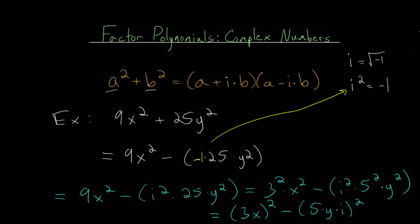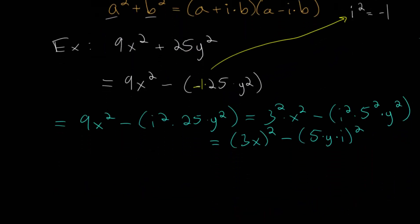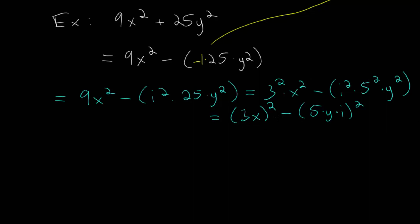So let me just make a little bit more room. And since we have a difference of squares, we can use that formula. Since the difference of squares, a squared minus b squared is really just a minus b multiplied by a plus b.